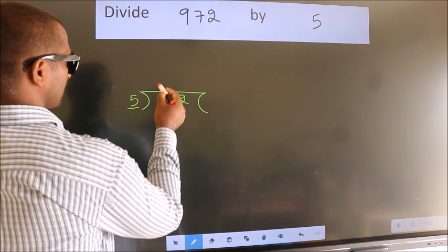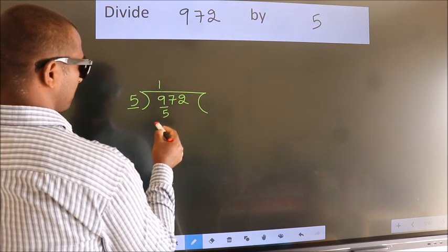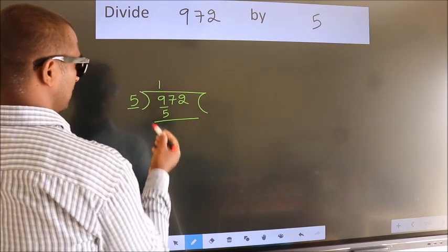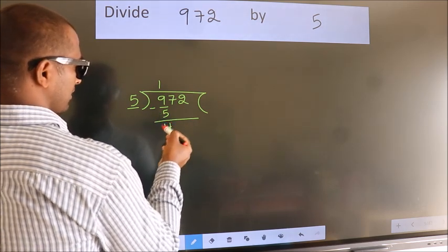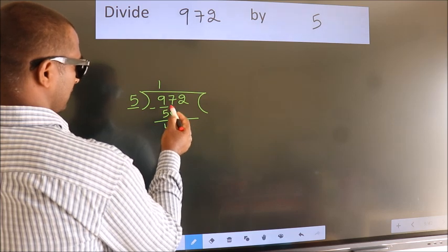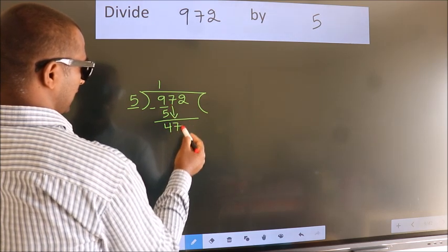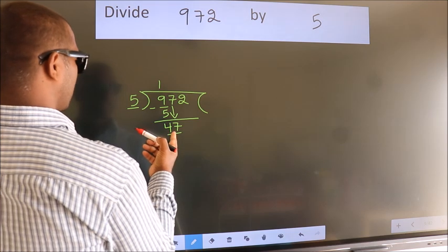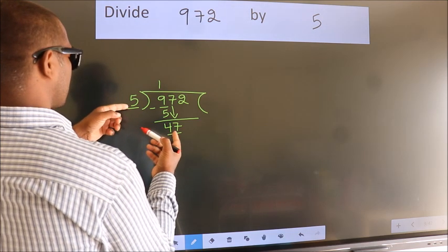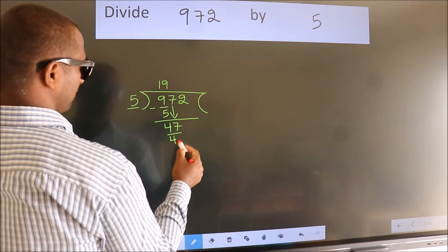Five ones five. Now we should subtract, we get four. After this, bring down the next number, so seven down. So forty-seven. A number close to forty-seven in five table is five nines forty-five.